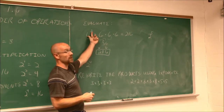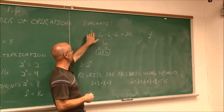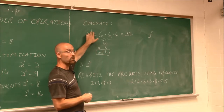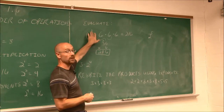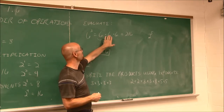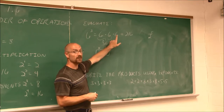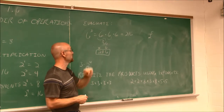Obviously, if we went 6 times 3 we'd only get 18. So exponents don't mean we multiply the base by the exponent — they tell us to take the base and multiply it by itself that many times.